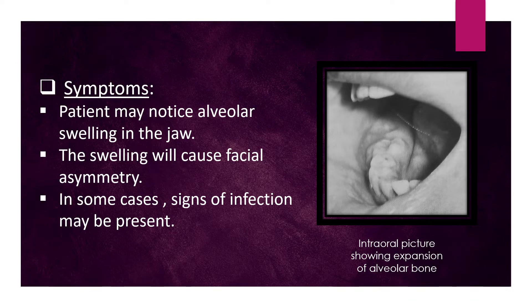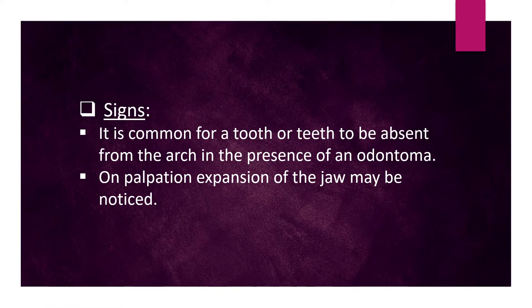Symptoms: The patient may notice alveolar swelling in the jaw. The swelling will cause facial asymmetry. In some cases, signs of infection may be present. Signs: It is common for a tooth or teeth to be absent from the arch in the presence of an odontoma. On palpation, expansion of the jaw may be noticed.